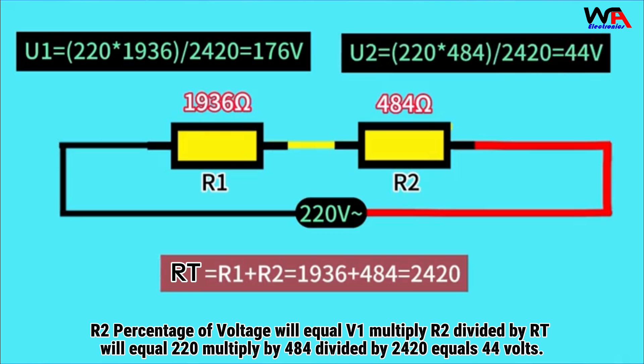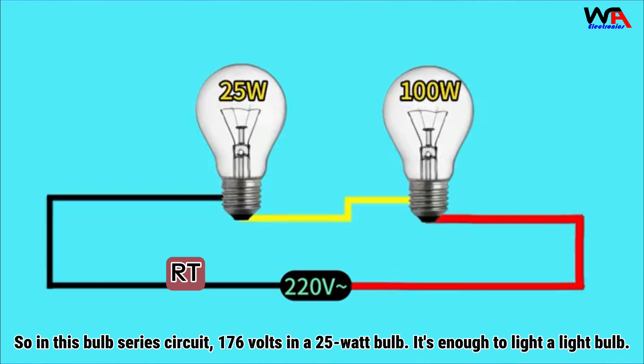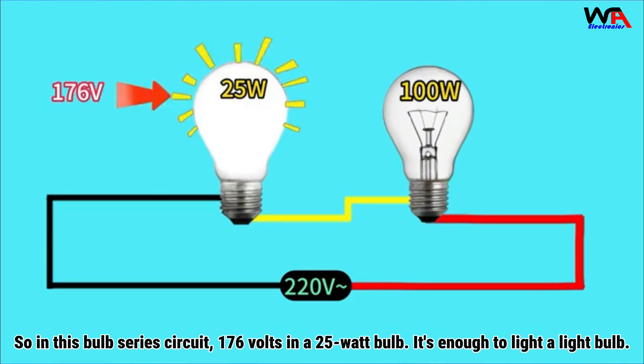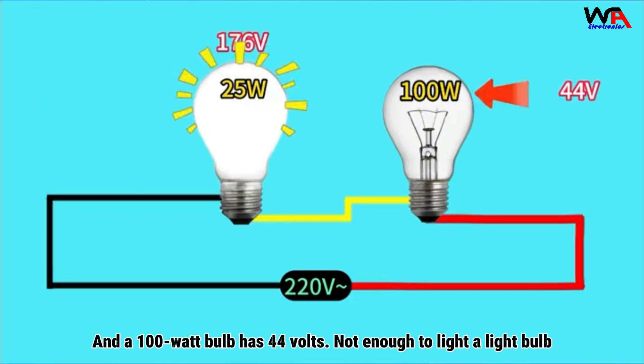So in this bulb series circuit, 176 volts in a 25-watt bulb is enough to light a light bulb, and a 100-watt bulb has 44 volts, not enough to light a light bulb.